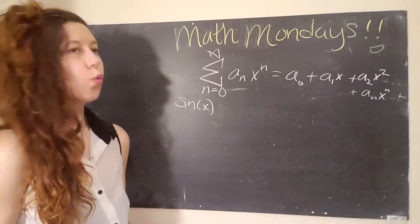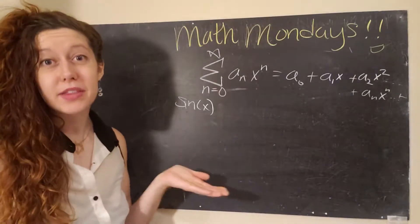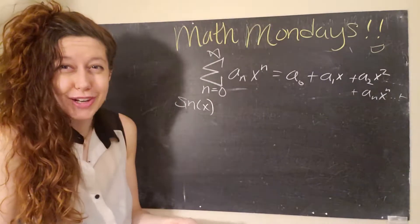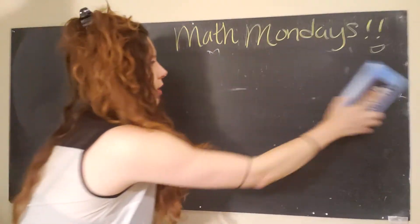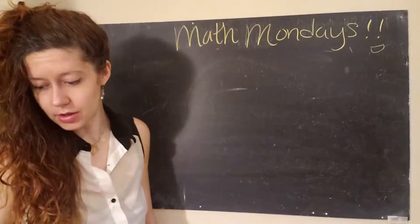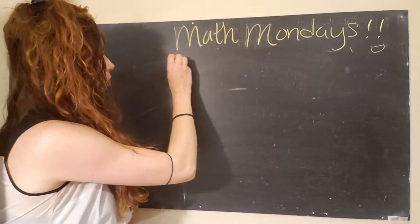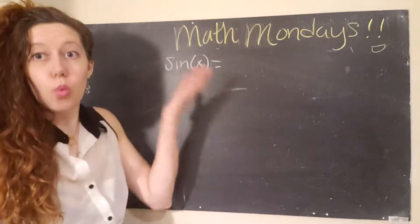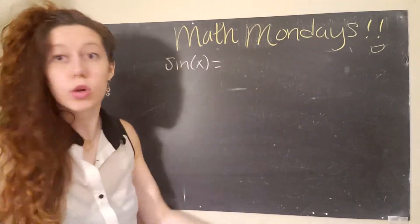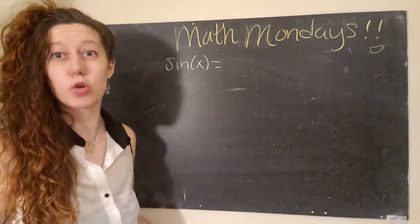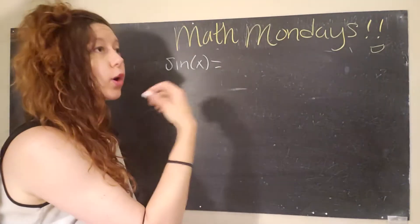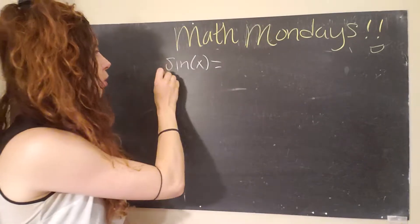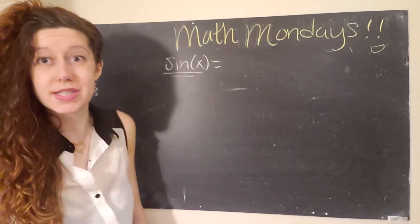And so we're going to start by assuming that we can do this. And then we will show that it actually does work, which is super cool. So I'm going to erase this because I'm going to need a lot of space on my chalkboard. And I'm going to write the general form of what our series would look like. So we're just really going to take the general form of a power series, and then we are going to find the specific coefficients that will actually represent the function sine of x.